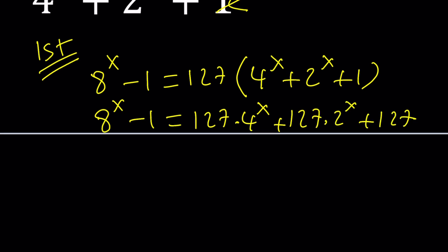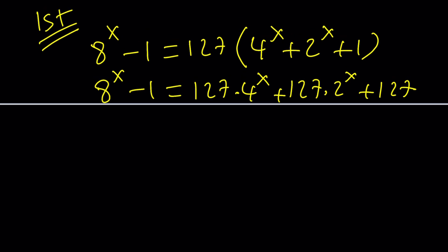Then you can go ahead and put everything on the same side combining like terms. Notice that the only thing you can combine is numbers. So we're going to get 8^x - 127·4^x - 127·2^x and then -1 - 127 is going to be -128. And the whole thing is equal to zero.